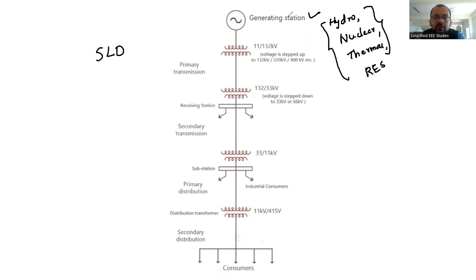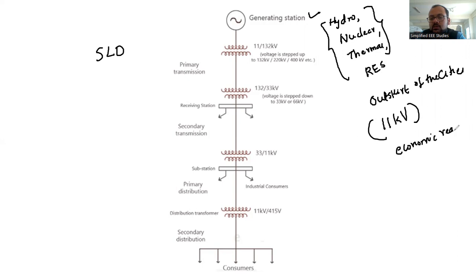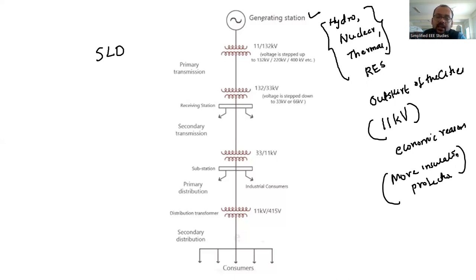Usually, power generating stations are located at the outskirts of the cities. The generated voltage is restricted to around 11 kV in India because of economic considerations. If they need to increase more than 11 kV, more insulation and more protective devices are required. Therefore, the generating voltage is restricted to 11 kV in India.